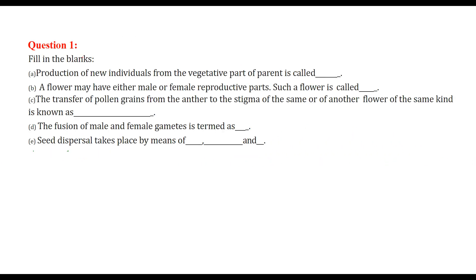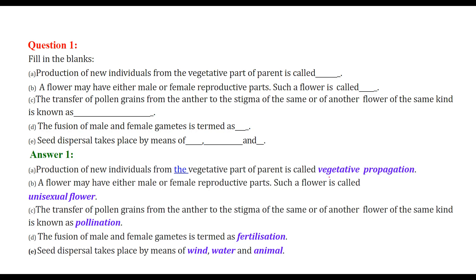Question and answer on reproduction in plants. First is fill in the blanks: production of new individuals from the vegetative part of a parent is called vegetative propagation. A flower may have either male or female reproductive parts; such a flower is called a unisexual flower.